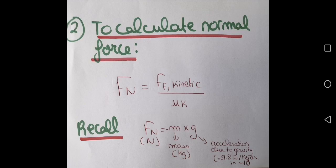We have to remember that normal force is opposite to gravitational force in direction, but equal in magnitude. So if we need to calculate the normal force, we use the equation: Fn equals negative m times g. Mass is in kilograms, and g is the acceleration due to gravity equal to negative 9.8 newtons per kilogram or meters per second squared. So if in the given you do not have the normal force but you have the mass, you can calculate the normal force and then continue.